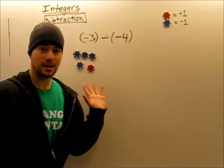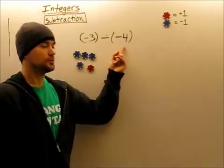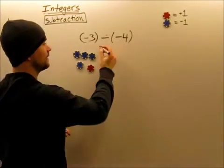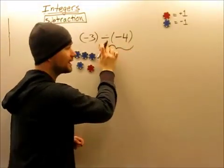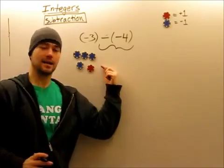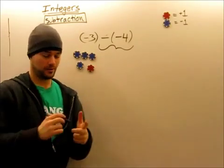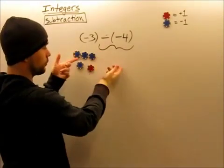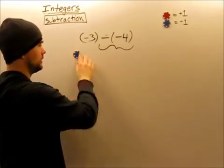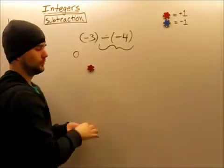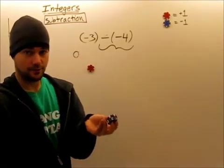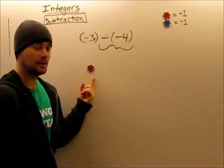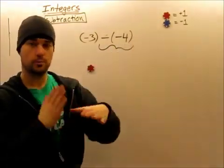However, now it's possible for me to subtract negative four. The action required — subtract a negative four — I can now do from what's on the board. All I have to do is take away these four blue chips: negative one, negative one, negative one, negative one — together, negative four. What do I have left? Positive one.